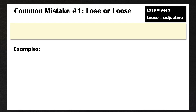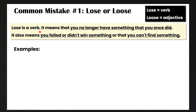The first common mistake is people don't know the difference between lose or loose. People often write loose with two O's when they should write lose. Lose is a verb — it means that you no longer have something that you once did. For example, you might lose your job and now you don't have a job. It also means you failed or didn't win something.